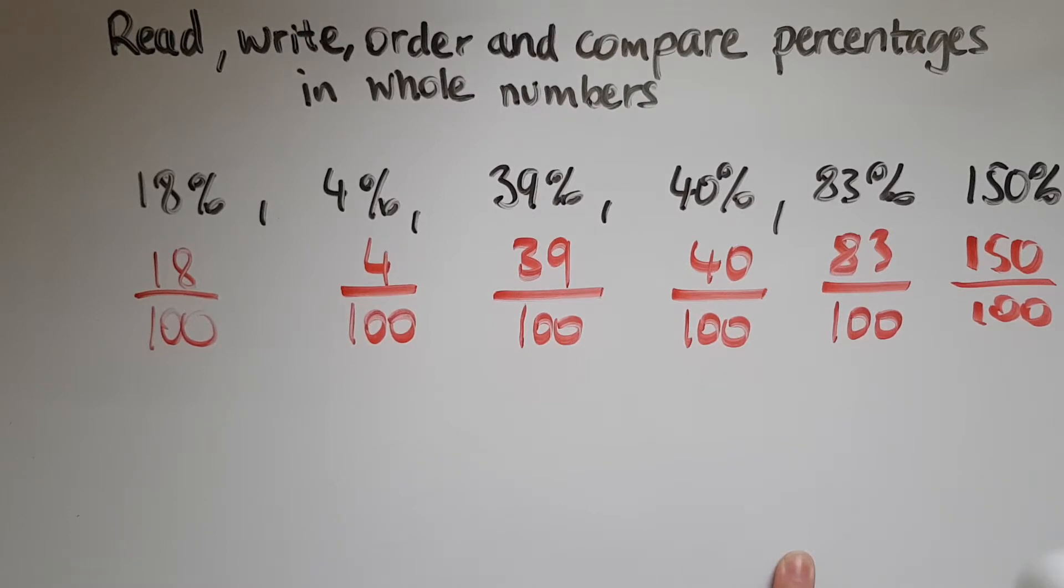And if I'm to order and compare them, it's pretty straightforward, it's just like comparing numbers. So if I look at these, the highest amount is 150. So 150 percent would be the highest percentage here, because it means not just 100 percent, but another 50 percent, another half.